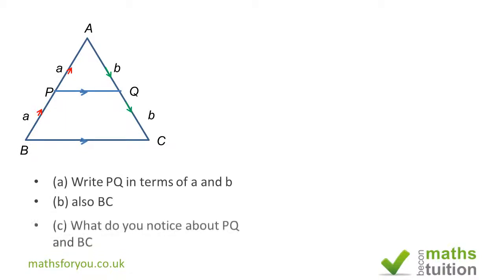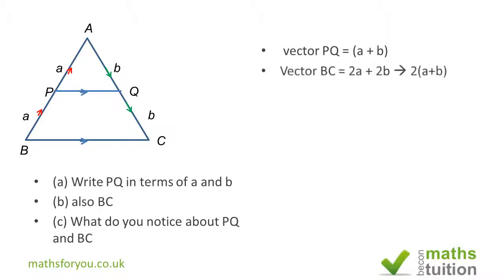Now we're supposed to find BC. We can do it one of two ways: we can go from B to A, which has a magnitude of 2a, and from A to C, which has a magnitude of 2b, so BC is 2a + 2b, or 2(a + b).